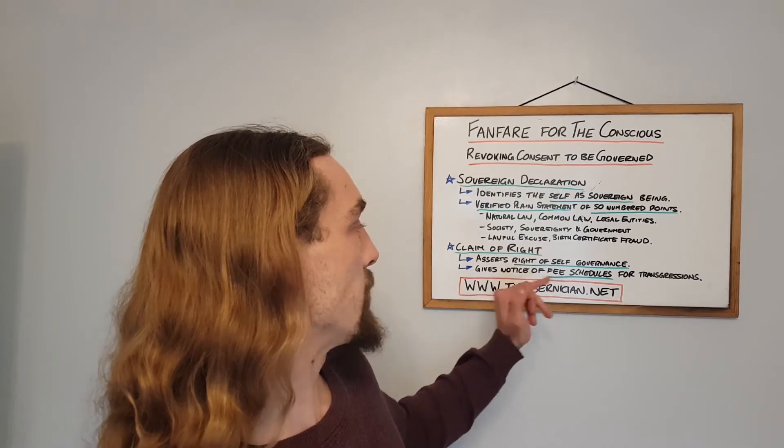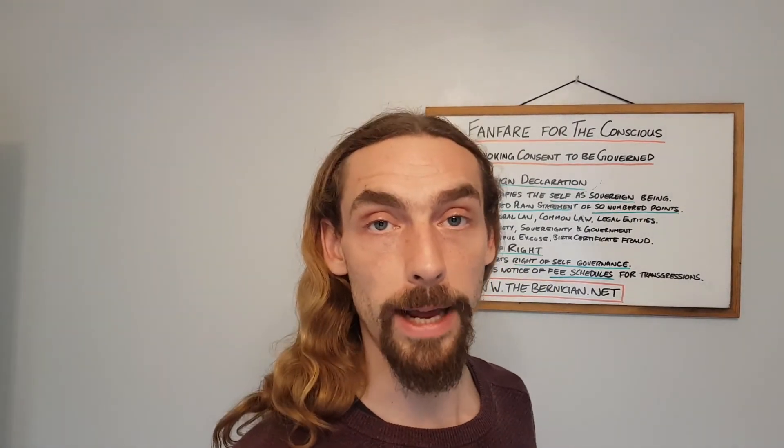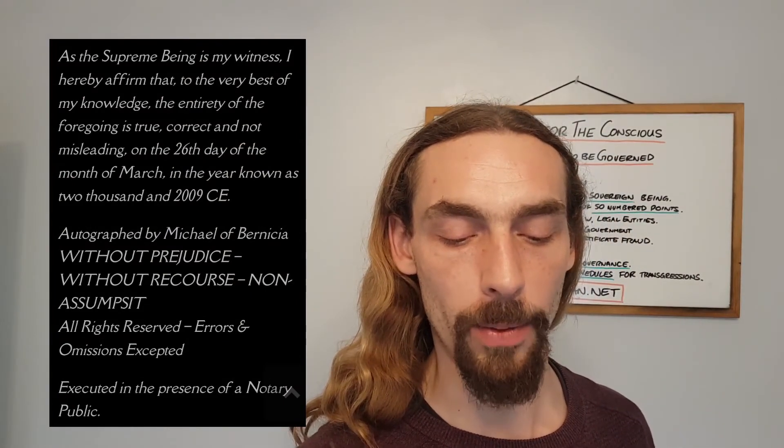What follows the sovereign declaration is the claim of right, which I'm not going to read word for word — again, if you want to check that out, go over to thebenician.net with links in the description. This is another multi-point claim with 23 points, with the ending quotation being: as the supreme being is my witness, I hereby affirm that to the very best of my knowledge the entirety of the foregoing is true, correct and not misleading on the 26th day of the month of March in the year known as 2009 CE. Autographed by Michael of Benicia, without prejudice, without recourse, all rights reserved, errors and omissions accepted, executed in the presence of a notary public.